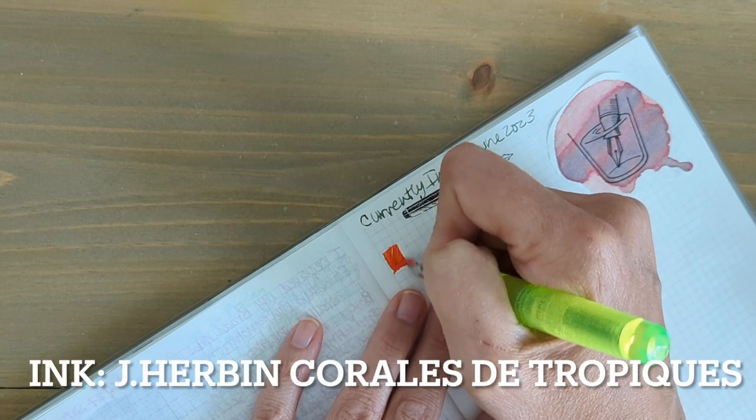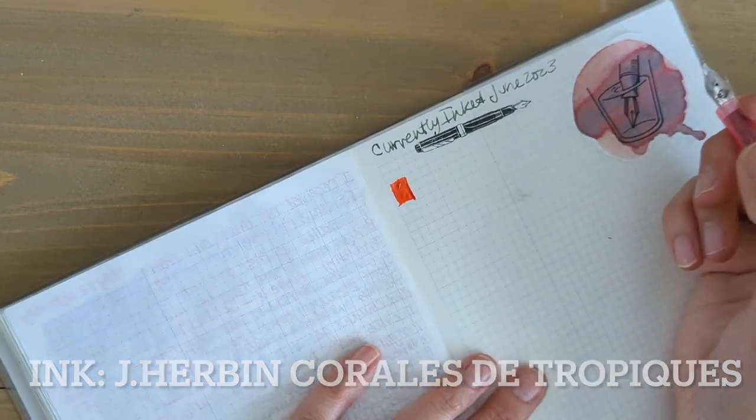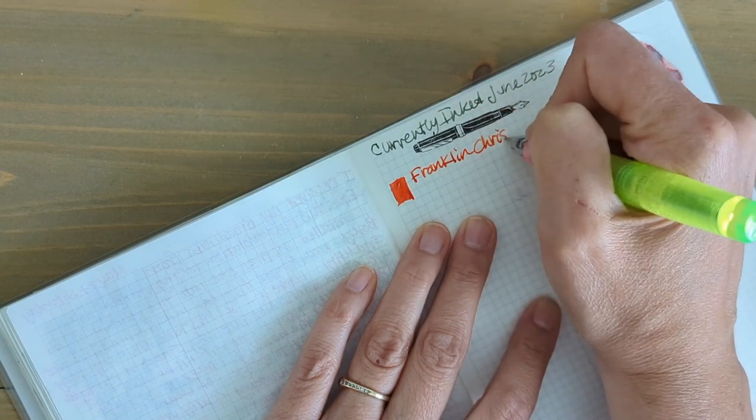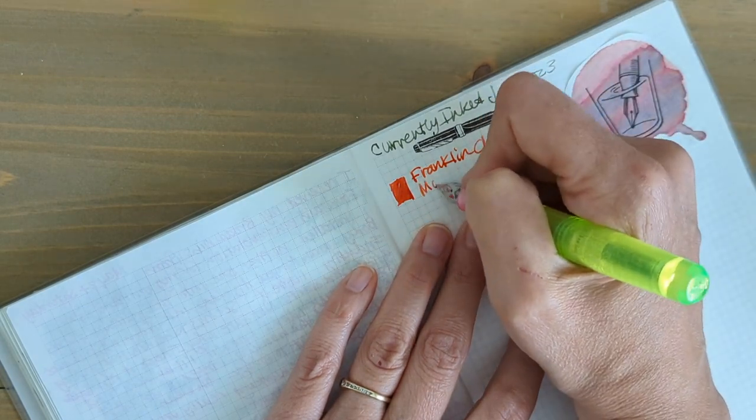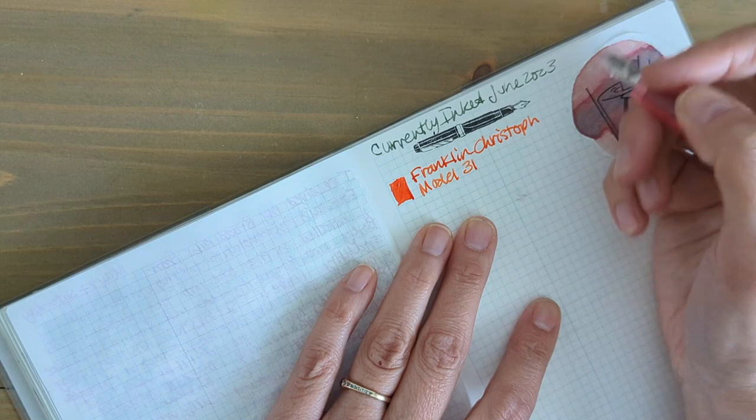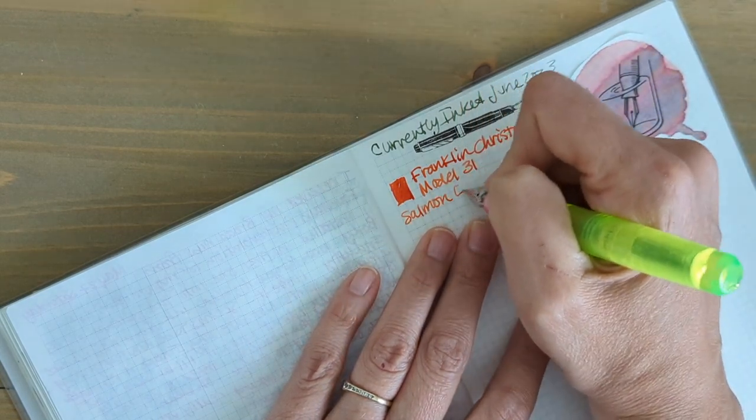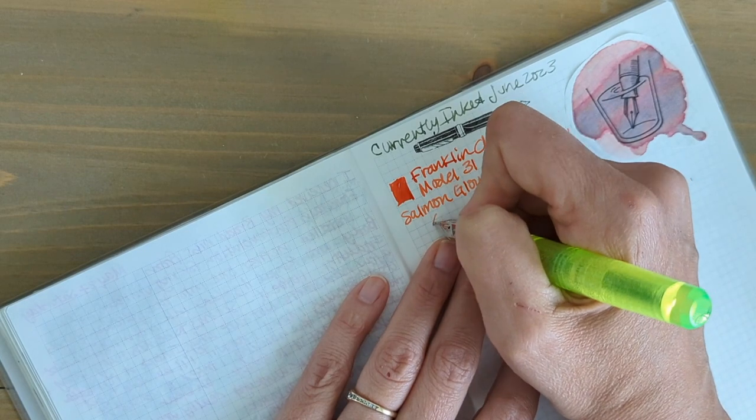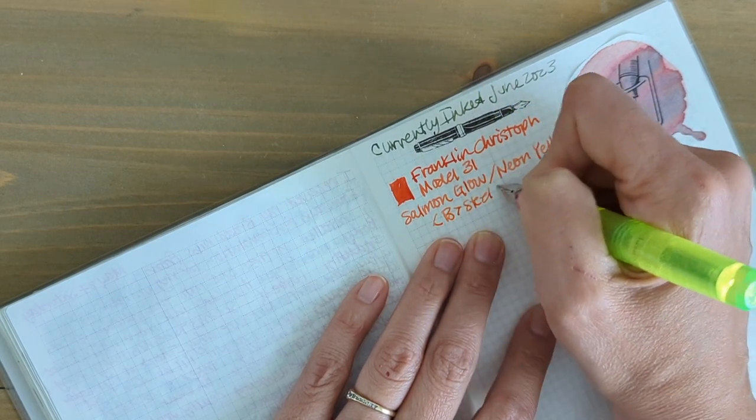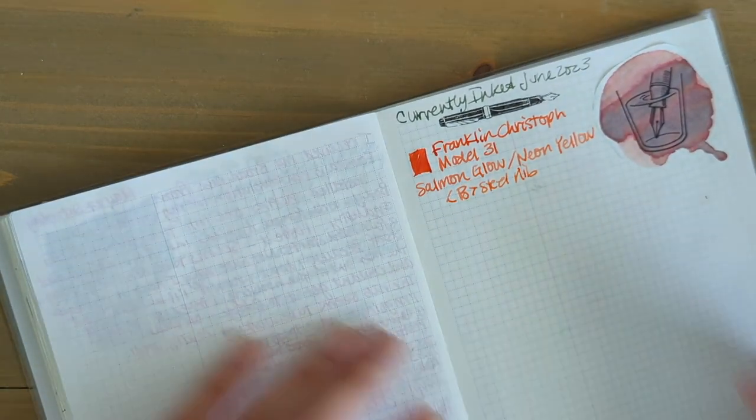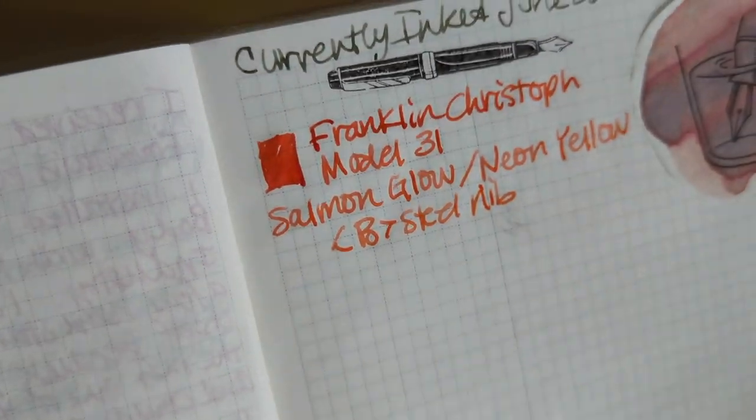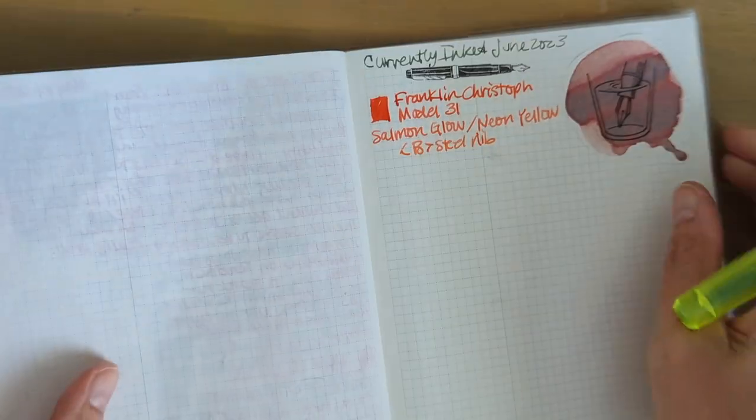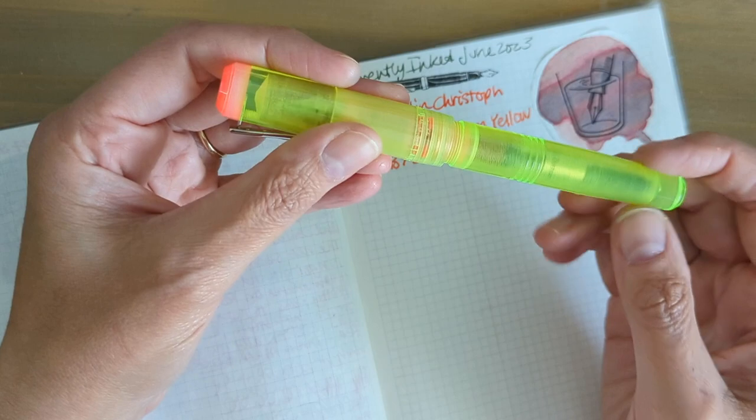One thing I notice about this pen is it always starts out very saturated, and I think that's probably because it dries out a little bit in the cap. This has a steel broad nib. It lightened up a little bit here but you can see it's very dark. That's my first pen.